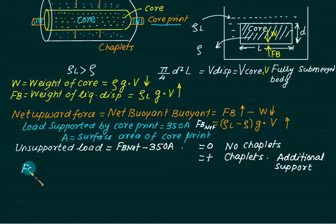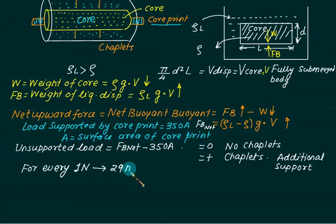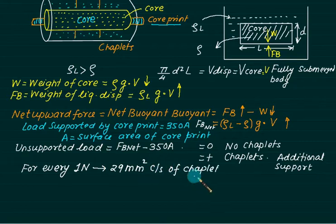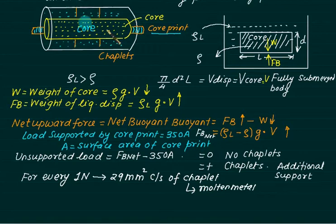For every 1 Newton of unsupported load, we require 29 mm squared cross-section area of chaplet. Chaplets are normally made up of the same material as the molten metal. Once the molten metal fills in, the chaplets get dissolved and the part is defect-free.